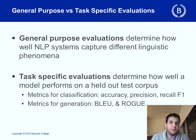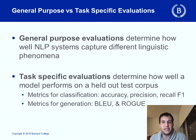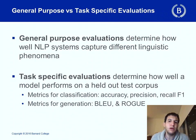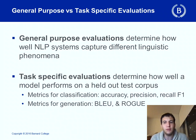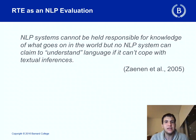In the era of deep learning, researchers also use probes to determine how well deep learning models capture linguistic phenomena. Auxiliary diagnostic classifiers are a general-purpose methodology for exploring how well different pre-trained sentence representation methods perform on a broad range of NLP tasks. This brings us to recognizing textual entailment, and specifically to recognizing textual entailment as an NLP evaluation.